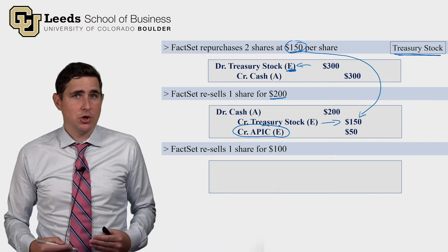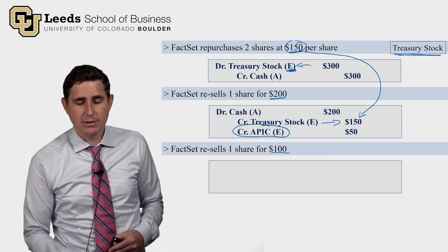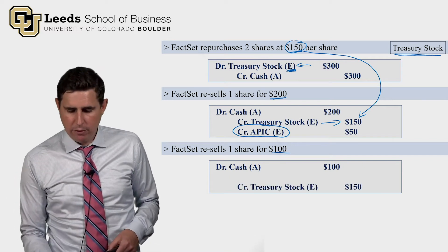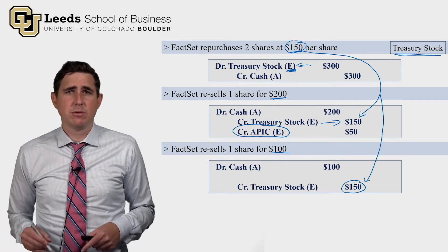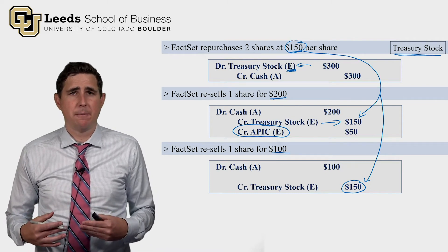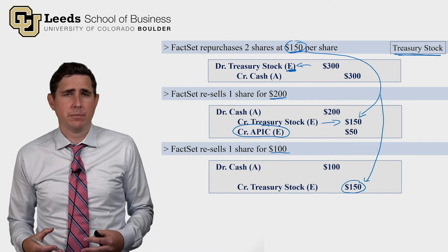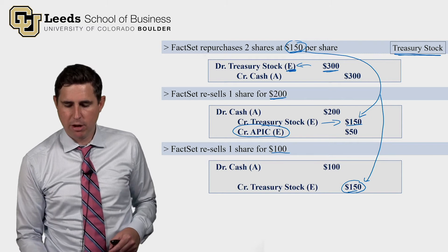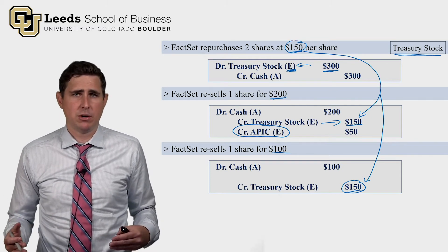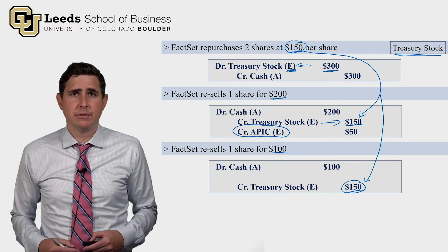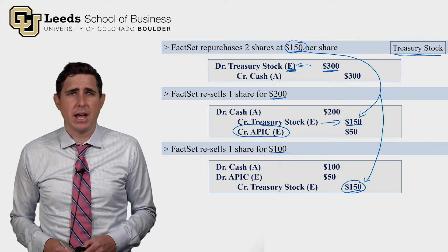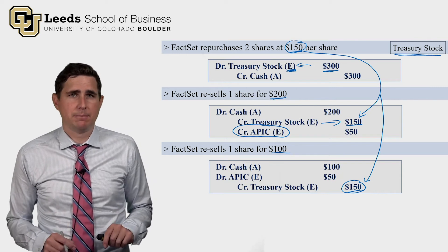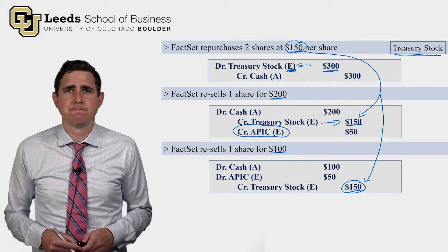Suppose FactSet resells the second share for $100 — that's a $50 loss. We debit cash $100 and debit APIC $50, then credit treasury stock $150. We take treasury stock out at cost so that when zero shares remain in treasury, the account balance is zero. We started with $300 in the account and have taken $300 out, so it's now zero. Importantly, we don't debit a loss account on the income statement.